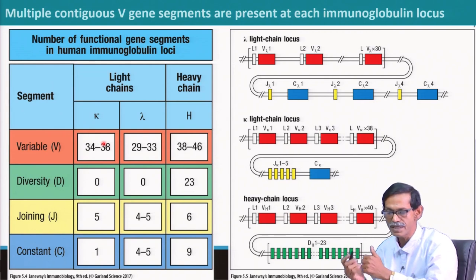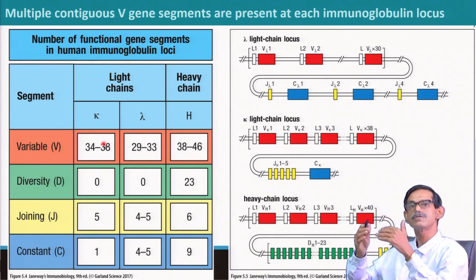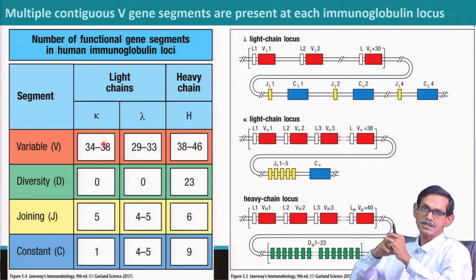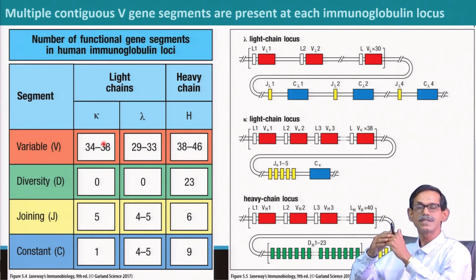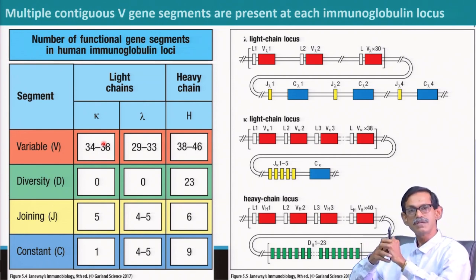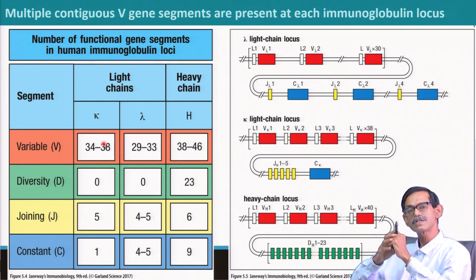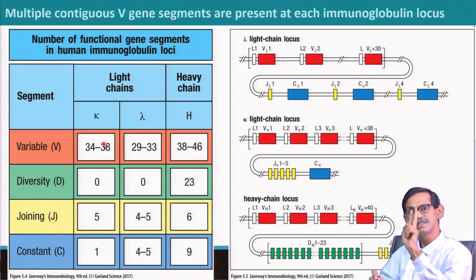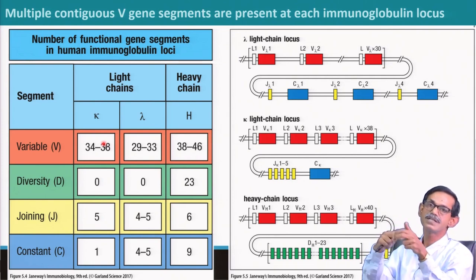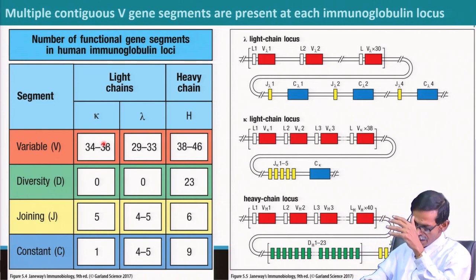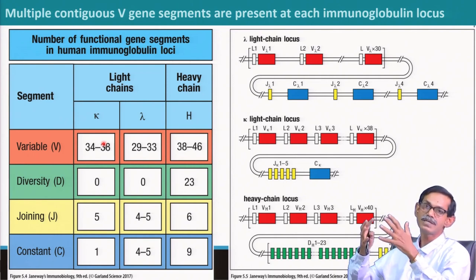The combined number of kappa-containing plus lambda-containing antibodies gives the diversity. Today we are going to see how V and J are going to join. A question comes automatically to mind: if there is recombination, why are two V segments not joining? Why are two J segments not joining? Why are all the D segments not joining one after another? Similarly, why are J segments of the heavy chain not joining? So how is it regulated that one V will join with only one J?